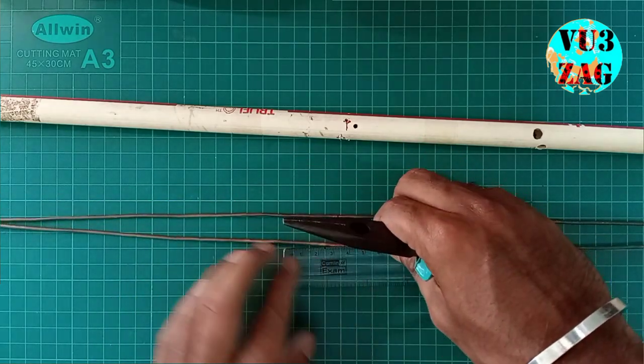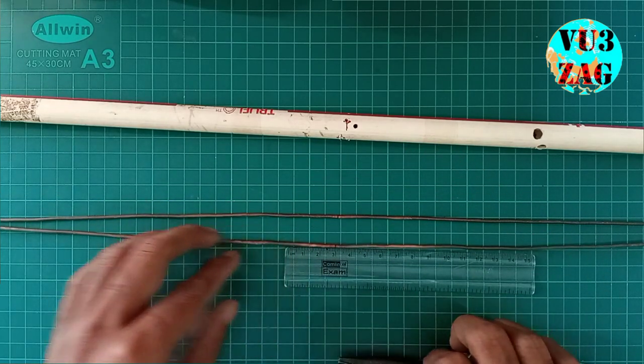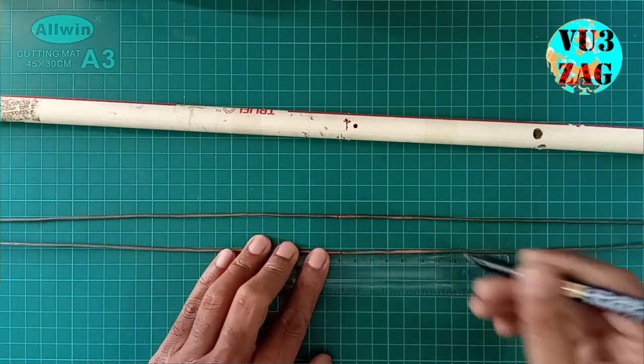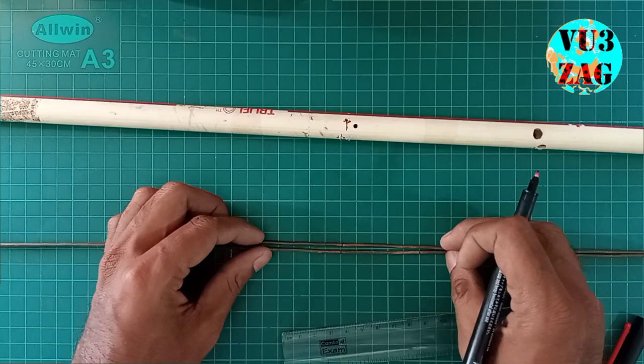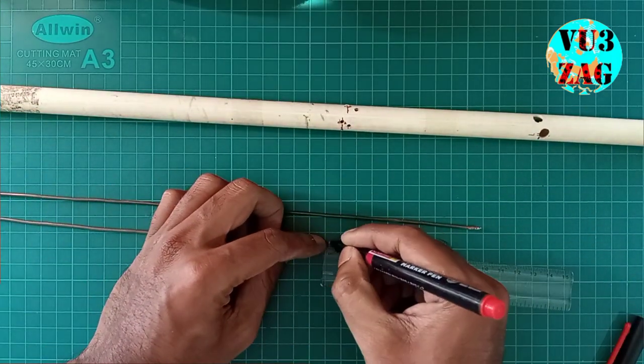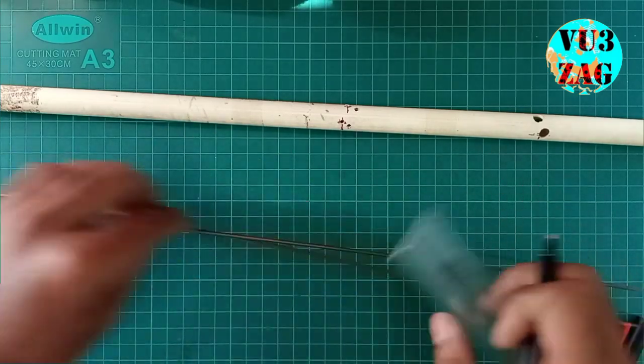We have to mark 5 centimeter from the center on both sides. Repeat this for both the copper rods. Similarly we need to mark 5 centimeter from the ends of each copper rod to identify the bending length of the top portion.